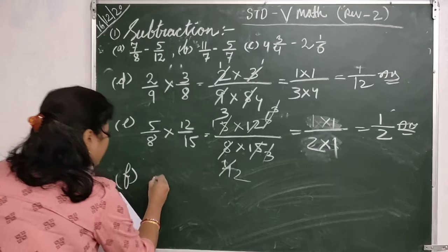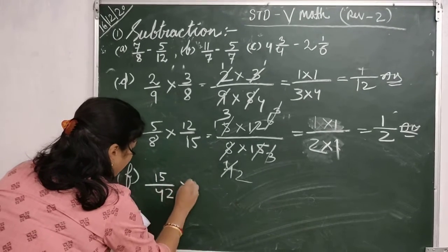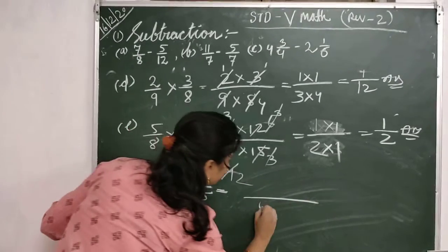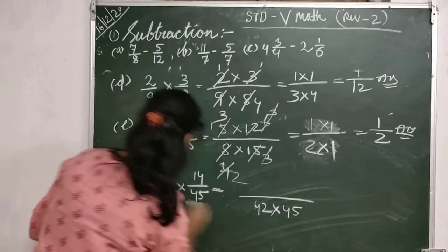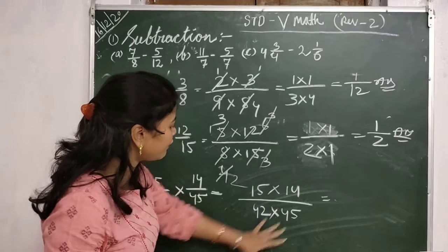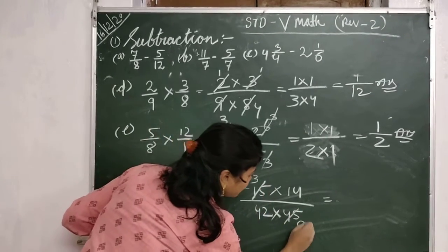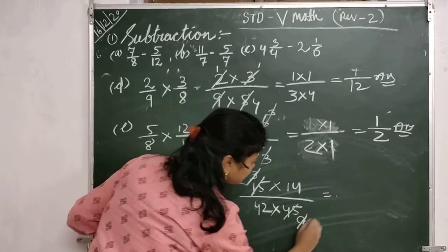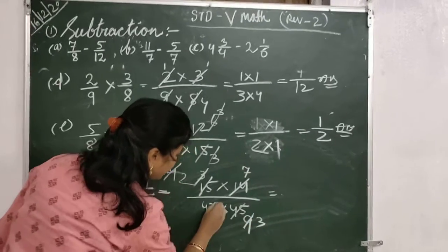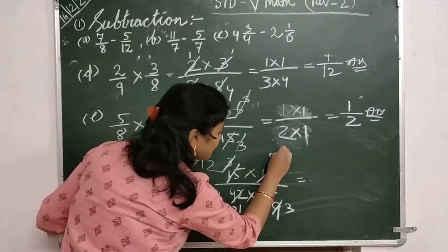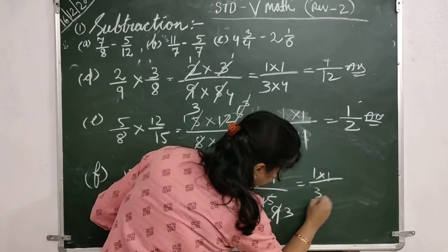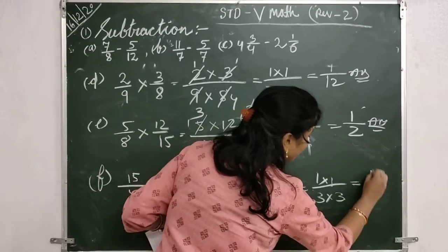The last one is 15 by 42 into 14 by 45. So here 42 multiplied by 45 and 15 multiplied by 14. Simplify: 15 and 45 — 5 times 3 is 15, 5 times 9 is 45; again 3 times 1 is 3, 3 times 3 is 9. Then 14 and 42 — divide by 2: 7 and 21; divide by 7: 1 and 3. Here 1 into 1 and 3 into 3. So the answer is 1 by 9.